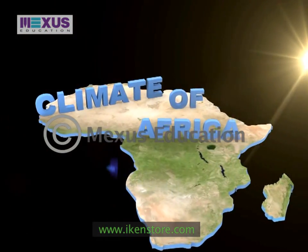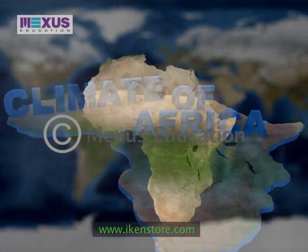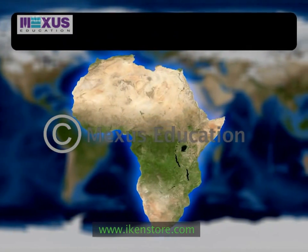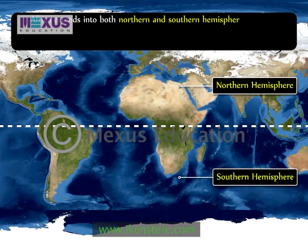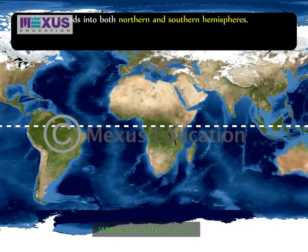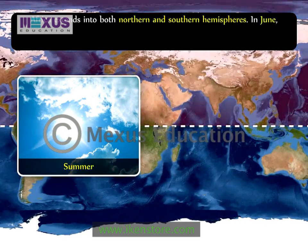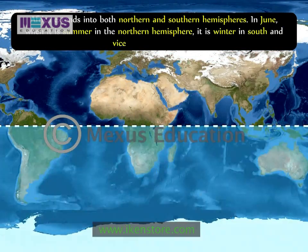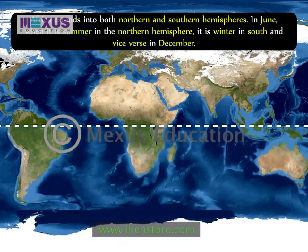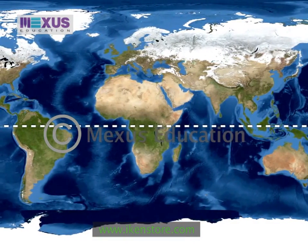Climate of Africa. Since Africa extends into both the northern and southern hemispheres, it experiences summer and winter at the same time. In June, when it is summer in the northern hemisphere, it is winter in the south, and vice versa in December.